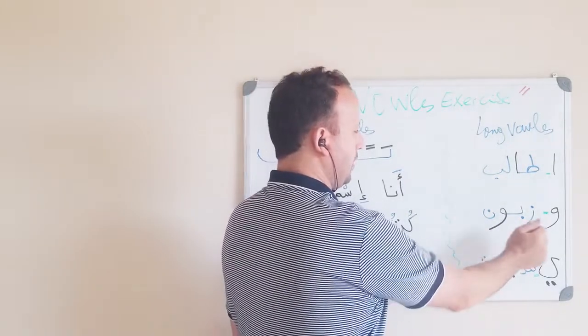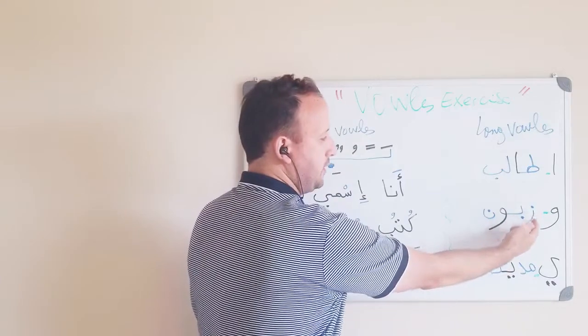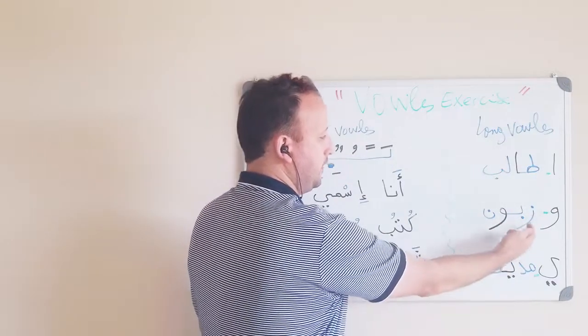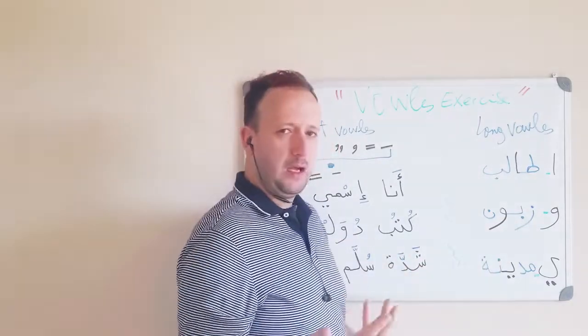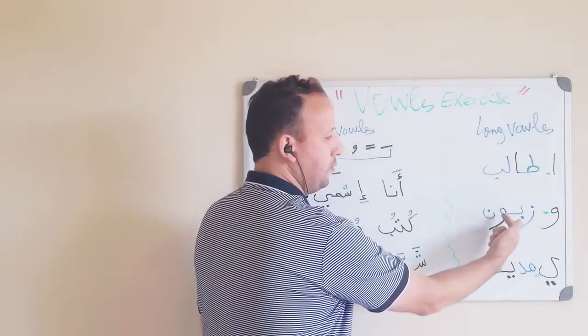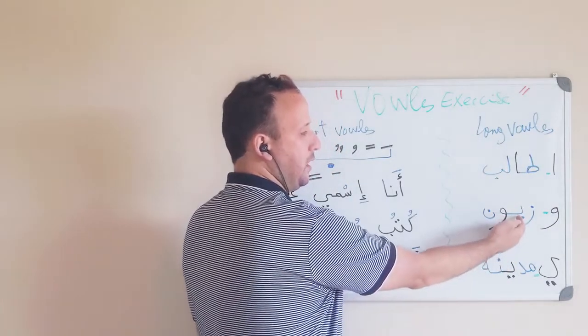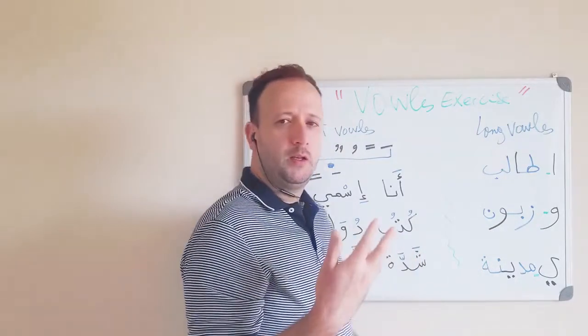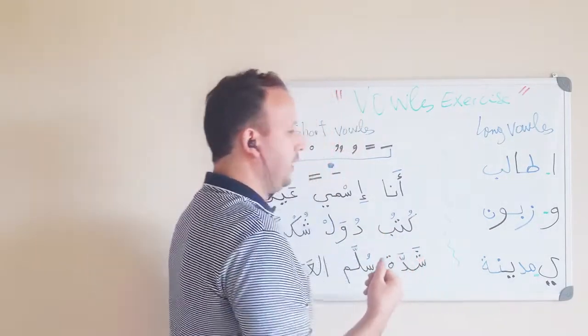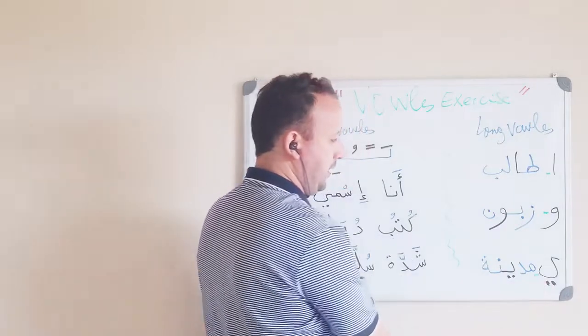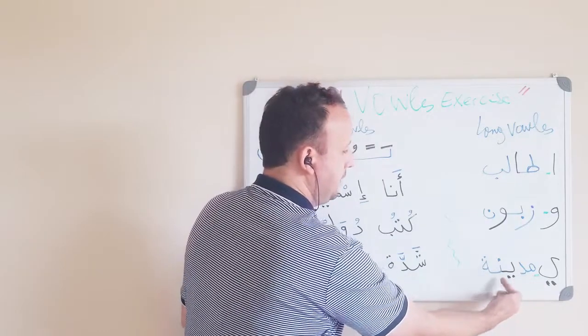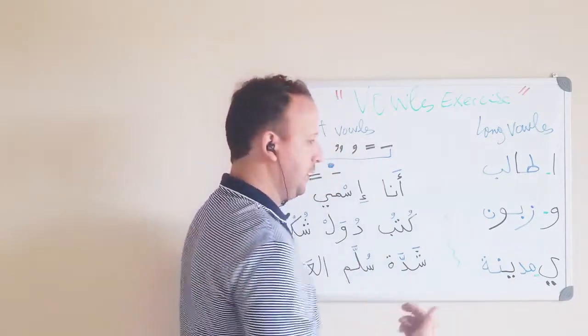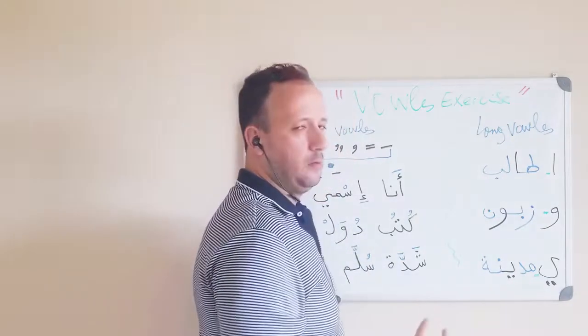The letter waw here, example we have zaboon. The word zaboon means client. So, waw means back O. Zaboon. And the last one is ya, madina. Madina, city. So ya, mim, dal, also long. Madina.